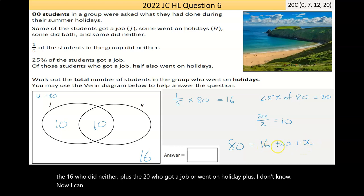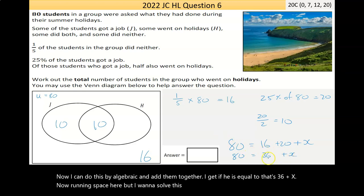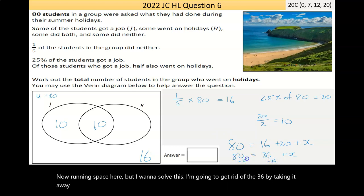Now I can do this by algebra. I can add them together. I get 80 is equal to that's 36 plus X. Now I've run out of space here, but I want to solve this. I'm going to get rid of the 36 by taking it away. Do it one side, I've got to do it both.